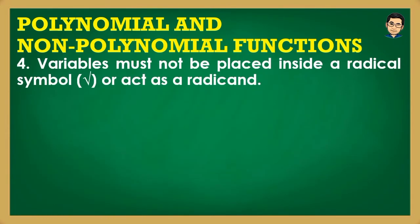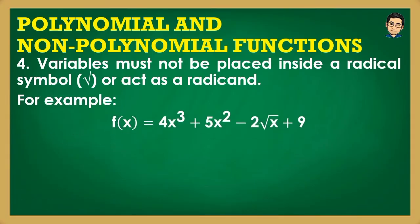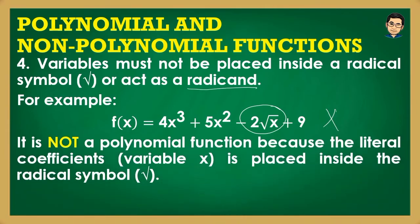Fourth and lastly, variables must not be placed inside a radical symbol or act as a radical. For example, f(x) = 4x³ + 5x² − 2√x + 9 is NOT a polynomial function. The variable x is inside the radical sign in the term 2√x. The numerical coefficient 2 should be the one inside the radical, and the variable x should be outside. Therefore this is considered a non-polynomial function.